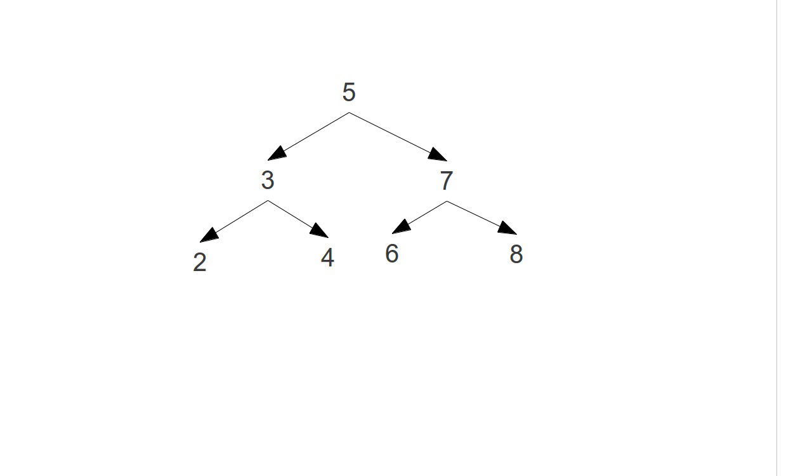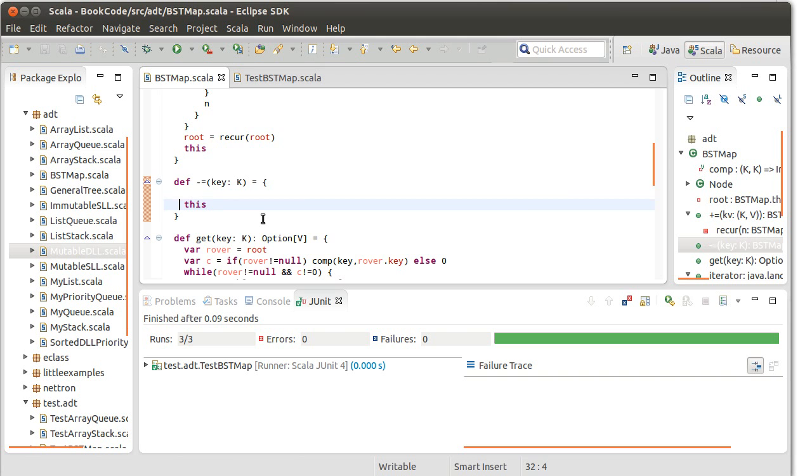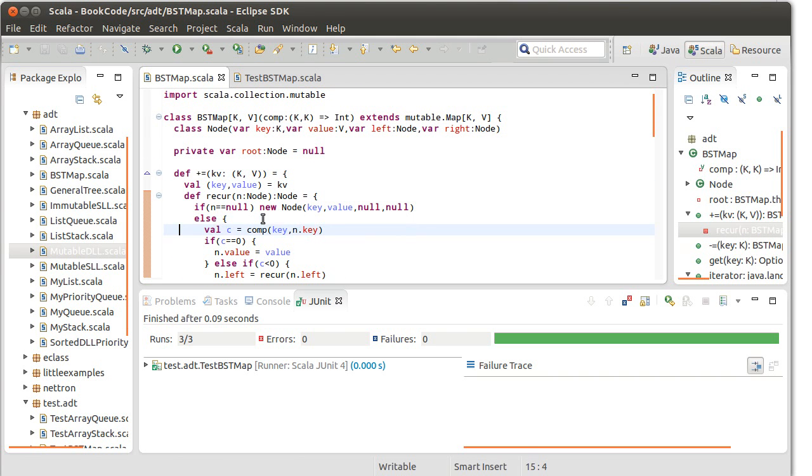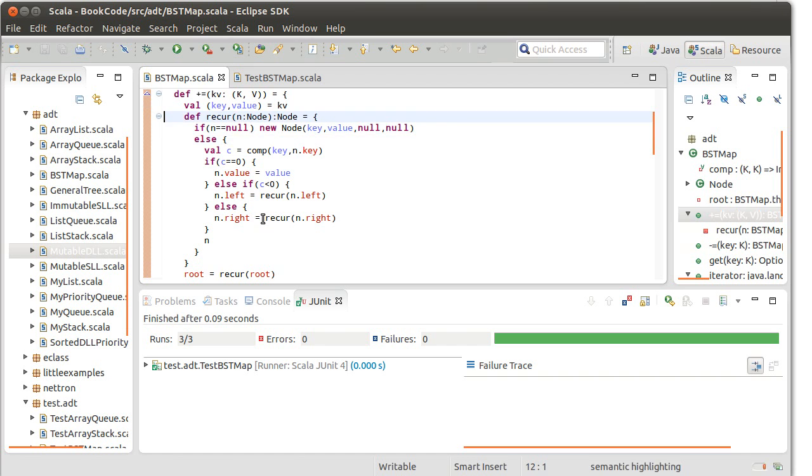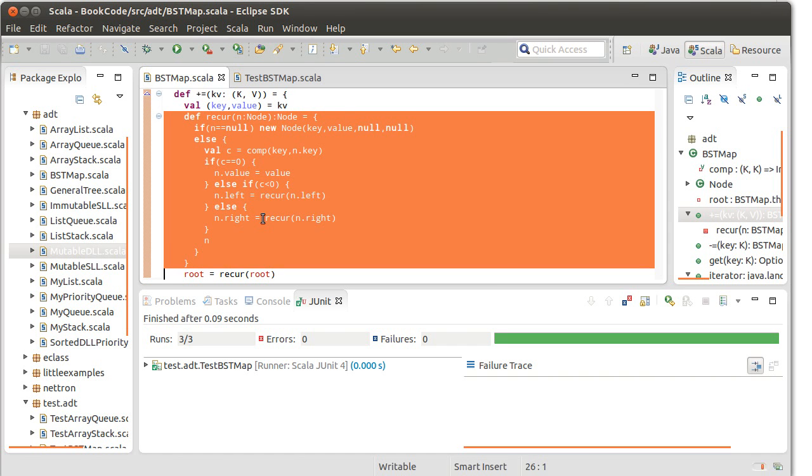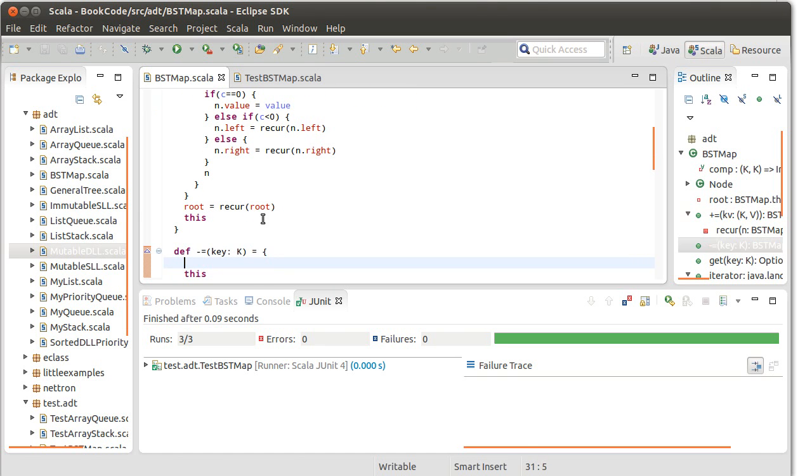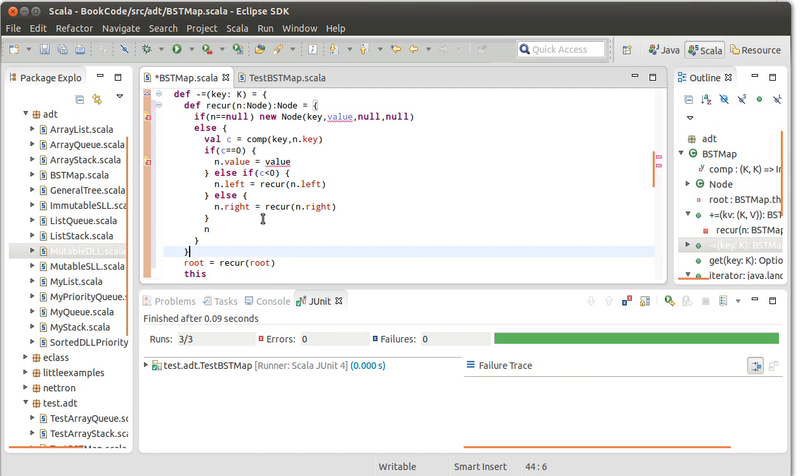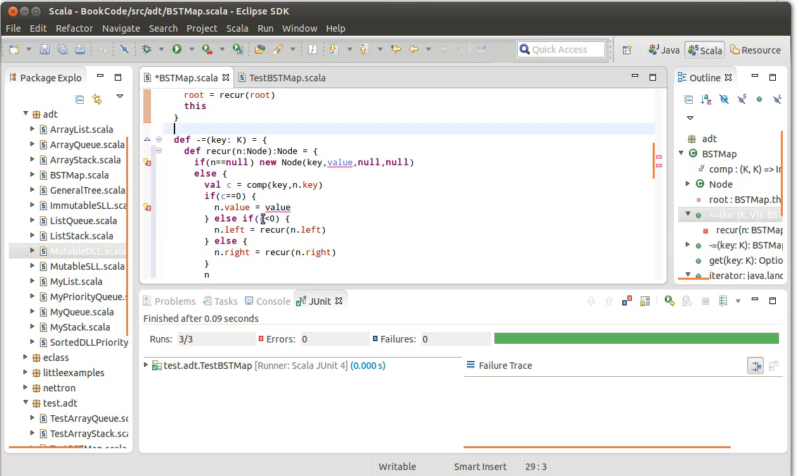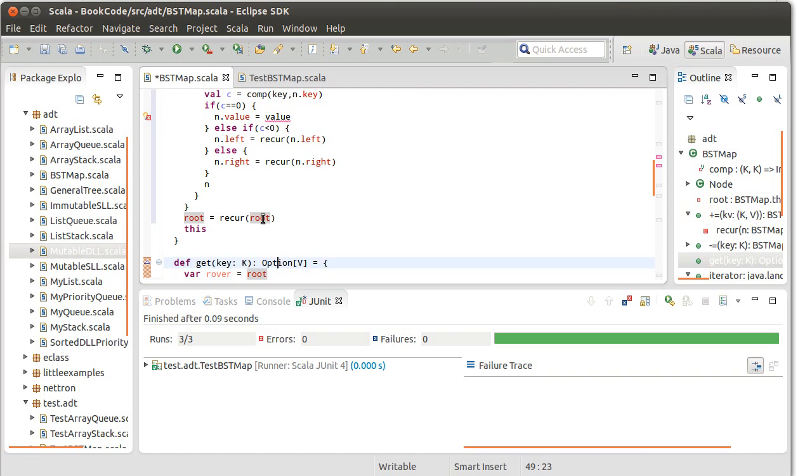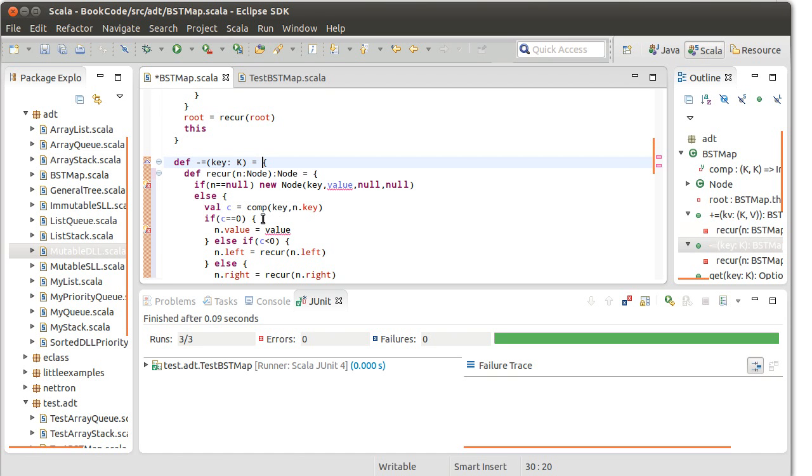I'm going to write it using two recursive methods. So we wrote our plus equals using a recursive method here. We had this recur. And it turns out that the version that I want, and I'm also going to copy this root equals recur root. What I want is going to look so similar to the add that I'm just going to copy over the add to start with. So I have my recur. It returns a node. That way handling the root isn't really a special case.